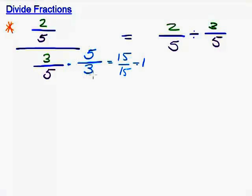So how can we get away with doing this? The only way we can is if we also multiply 2 fifths by 5 thirds.